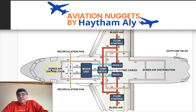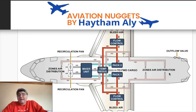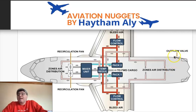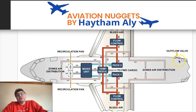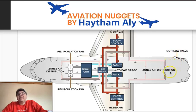Once air is distributed into the cockpit, forward cabin, and aft cabin, we need to control pressurization. Cabin altitude must be kept within safe limits — in the Airbus A320, the cabin altitude safe limit is approximately 8,000 feet. Pressurization is controlled by regulating the exit of air from the fuselage through one outflow valve. On the ground this valve is almost fully open, and as the aircraft climbs it moves toward a more closed position.